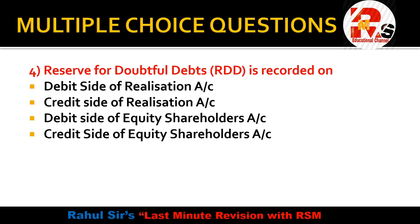Question 4: Reserve for Doubtful Debts (RDD) is recorded on which side? Options are: debit side of realization, credit side of realization, debit side of equity shareholders, or credit side of equity shareholders. The right answer is it is recorded on the credit side of the Realization Account. We write debtors on the debit side of all sundry assets and RDD amount on the credit side of the realization account as a minus.